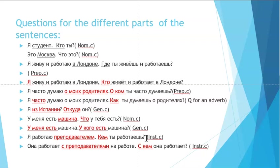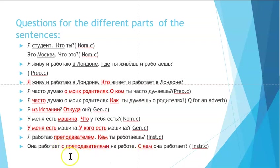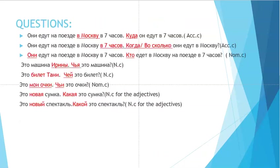For 'я работаю преподавателем' (I work as a teacher), the question is 'кем ты работаешь?' — instrumental case. For a different construction 'она работает с преподавателем' (she works with a teacher), we use 'с кем' because it's animate — 'с кем она работает?' This is also instrumental.